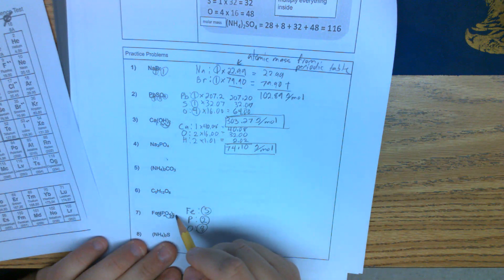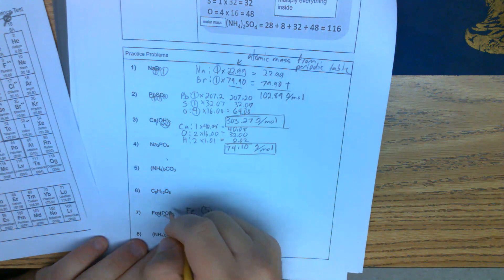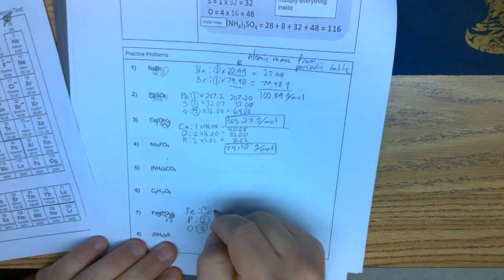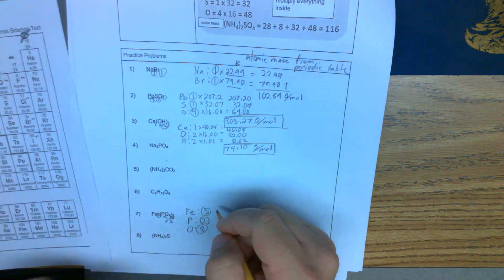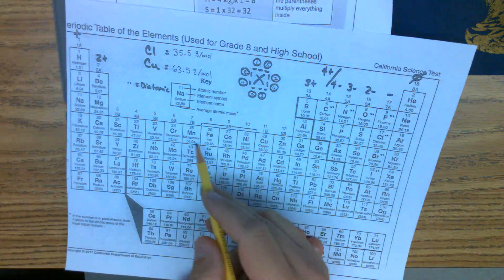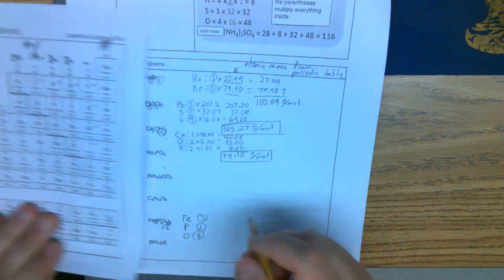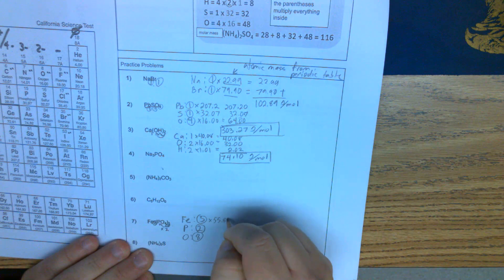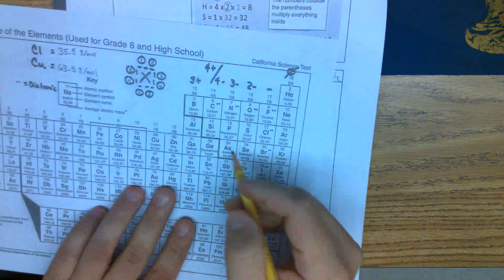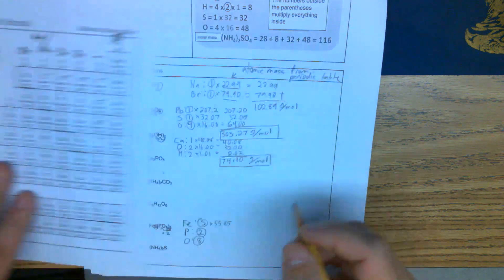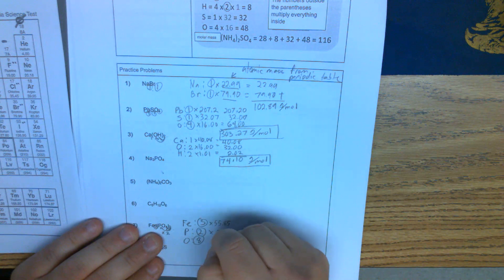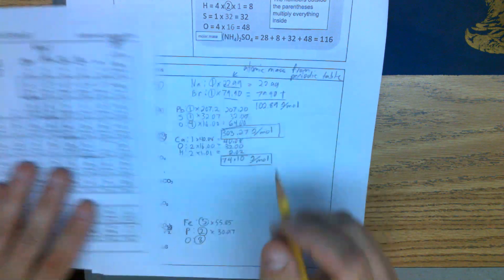These are where we're getting the numbers from. For inside, we multiply times 2, each of the ones inside. Then we look at our masses. Iron is 55.85, phosphorus is 30.97, and oxygen is 16.00.